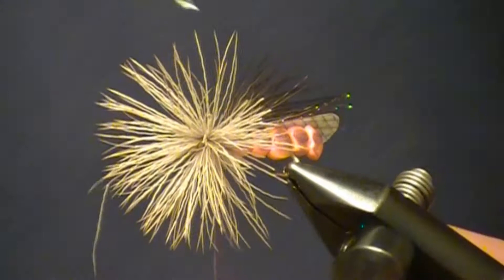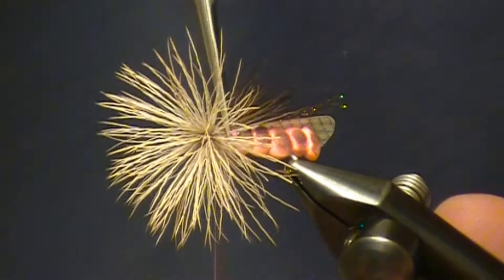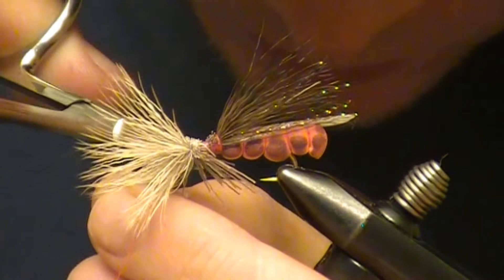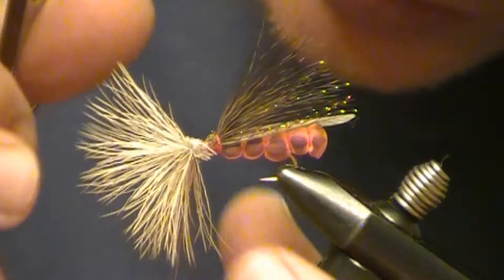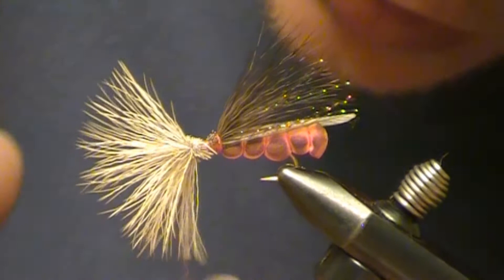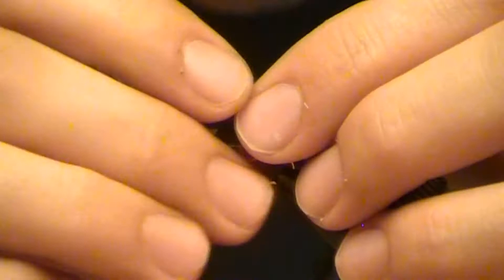I'm going to go through and clip all my short butts, being careful not to clip my thread. As you're doing these bullet heads you will for sure at some point cut your thread, but it's no big deal. Just re-tie it and continue tying your fly.